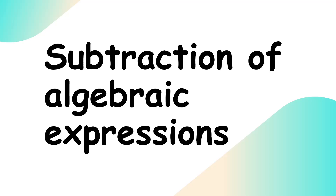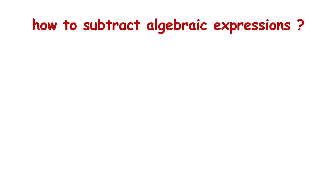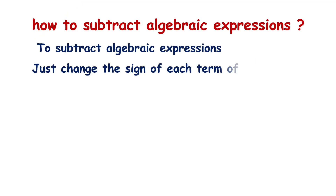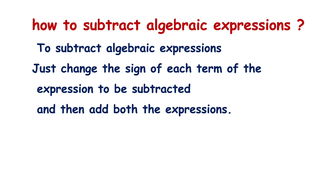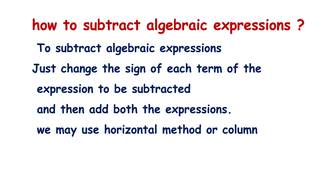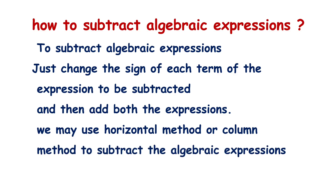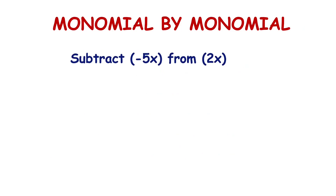Dear students, welcome back to the chapter on algebraic expressions. We have already learned addition of algebraic expressions. Today we are going to learn how to subtract algebraic expressions. To subtract algebraic expressions, just change the sign of each term of the expression to be subtracted and add both expressions. We can subtract using the horizontal method or column method. Now let's get started.